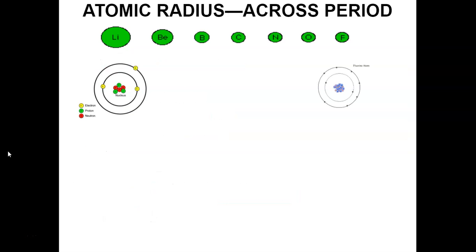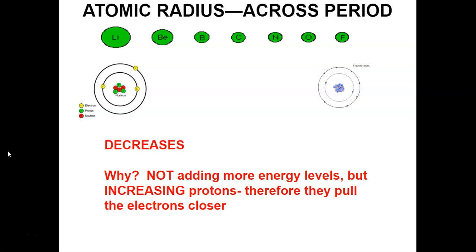As we go across a period, this is a little less intuitive. From left to right, atoms actually get smaller. This shows period two from lithium to fluorine, and they're getting smaller, which is surprising because you might think you're adding more stuff. However, we're not adding any new energy levels — both lithium and fluorine have two occupied energy levels. We are increasing the protons in the nucleus, so those protons pull the electrons more strongly, making the atoms smaller.